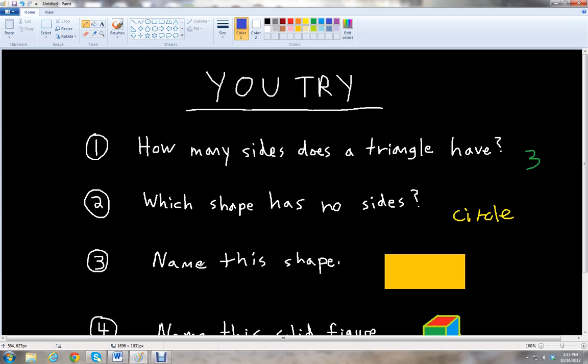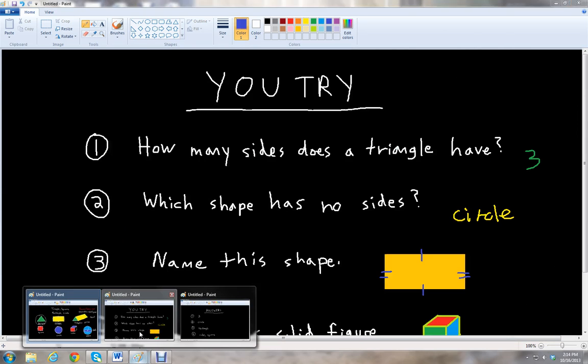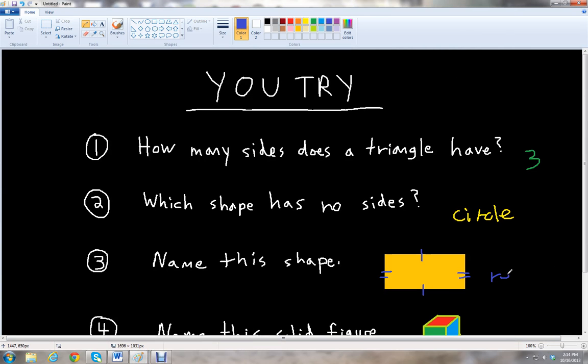And then for question three, name this shape. So this one is the four-sided figure. Looks like with the opposite sides are the same length. So let's see, which one was that? That was the rectangle, right? Yep, the rectangle.